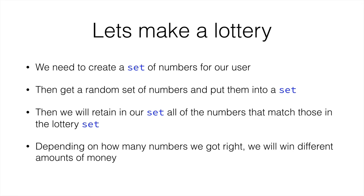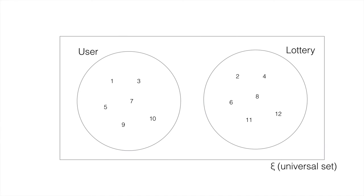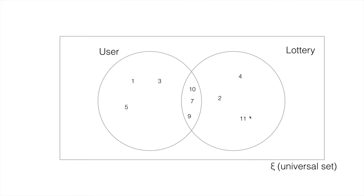Let me show you a graphical example. Let's say we have our six numbers: 1, 3, 5, 7, 9, and 10. And we have the lottery numbers: 2, 4, 6, 8, 11, and 12. As you can see, no two numbers match here. Let's change it so that some numbers match — we're going to make 7, 9, and 10 appear in the lottery instead of 6, 8, and 12. So now our user has 1, 3, 5, 7, 9, and 10, and our lottery has 2, 4, 7, 9, 10, and 11.